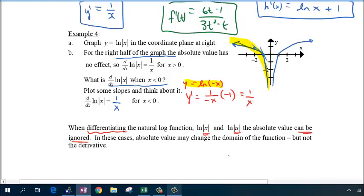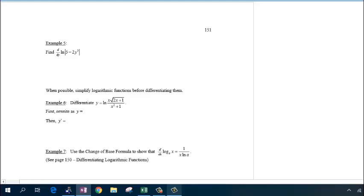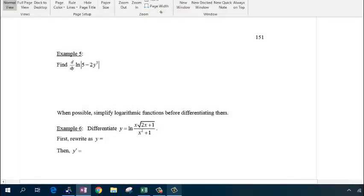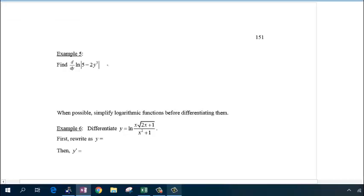Bottom line: if I give you the absolute value for this natural log function, if I ask you to differentiate it, don't worry about that absolute value—it can be ignored because the derivative is still the same. In this case, the absolute value may change the domain but it won't change the derivative. Knowing that, turn the page and I'm going to ask you to try Example 5. Notice this is y as my independent variable, so it's not implicit differentiation, just regular derivatives. So 1 over 5 minus 2y cubed, chain rule, negative 6y squared, and there you have it, your derivative.